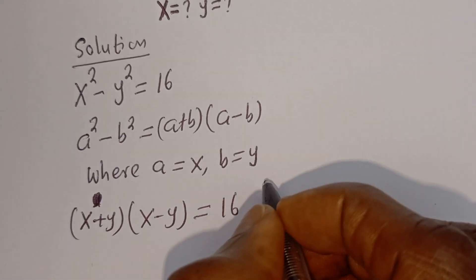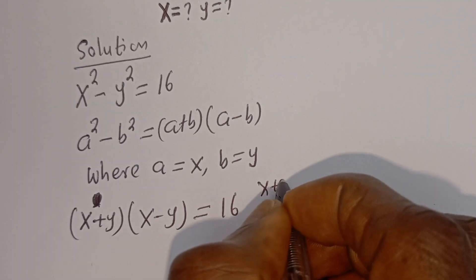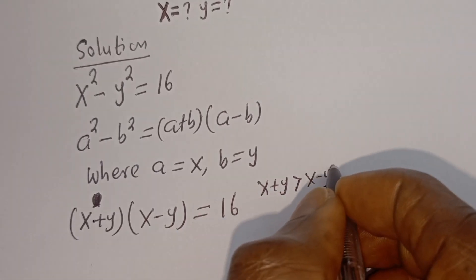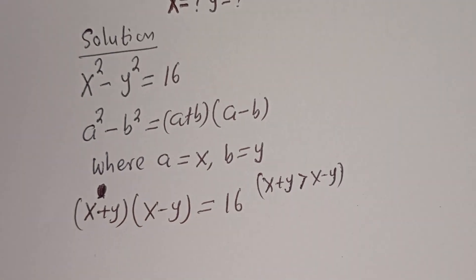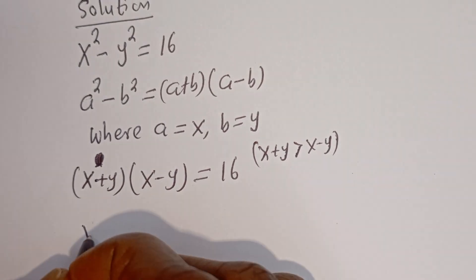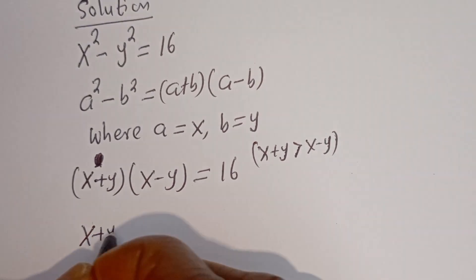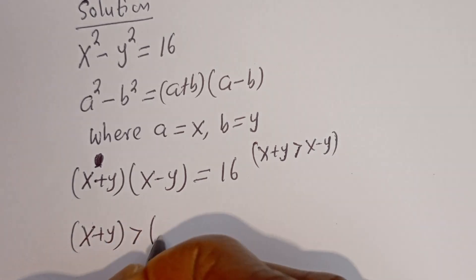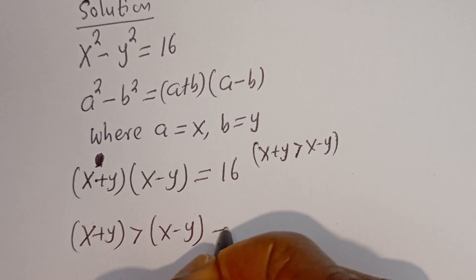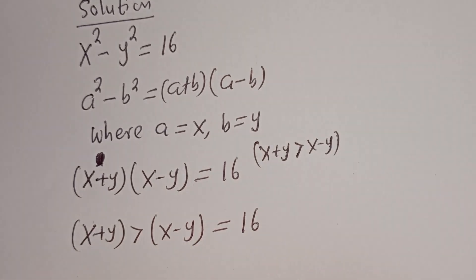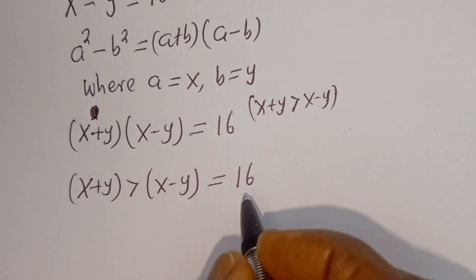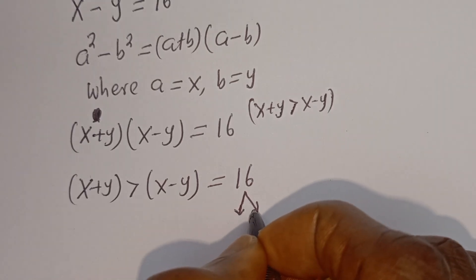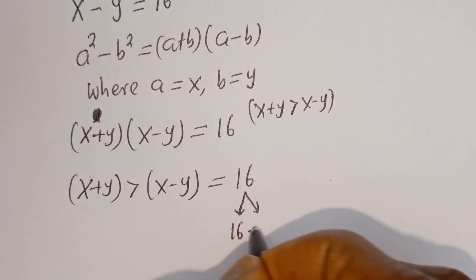From here, x plus y is greater than x minus y. Therefore (x + y)(x − y) = 16. We need to look for the product pairs of 16. 16 is a product of 16 multiplied by 1.